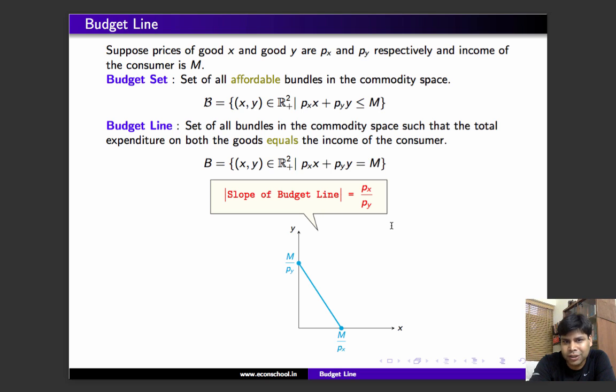This is how you plot the budget line. It's simply plotting the line px·x + py·y = M, taking as given px, py, and M. If the consumer spends all his money on x, he can afford M/px units of x. If he spends all his money on y, he can afford M/py units of y. Since it's a line, we just connect the two points to get the entire budget line.